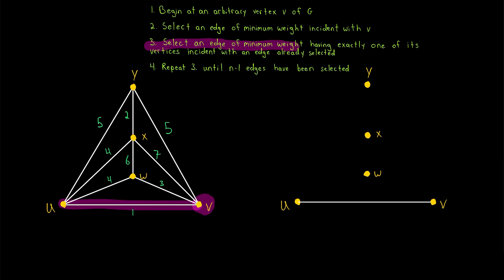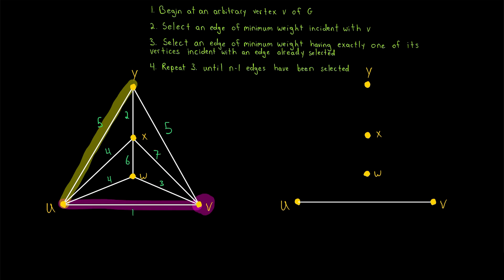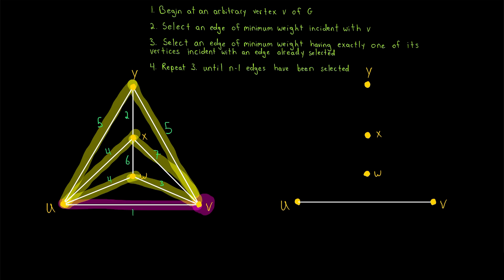Step three: select an edge of minimum weight having exactly one of its vertices incident with an edge we've already selected. There are six such edges — three share vertex U with the edge we just selected, and three share vertex V. Among these six edges, with weights 5, 4, 4, 5, 7, and 3, we select the edge of weight 3 joining V and W.